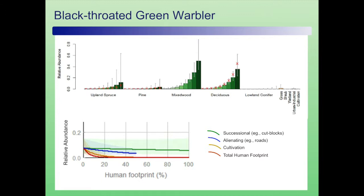This is an example for the Black-throated Green Warbler. It shows that Black-throated Green Warblers like some forest types more than others — they're more abundant in some forest types than others, and they tend to be more abundant in older forests than in younger forests. The bottom graph shows that as different types of human footprint in the landscape increase, Black-throated Green Warblers tend to decrease. This is a modeling exercise that allows you to understand how they use the habitat.